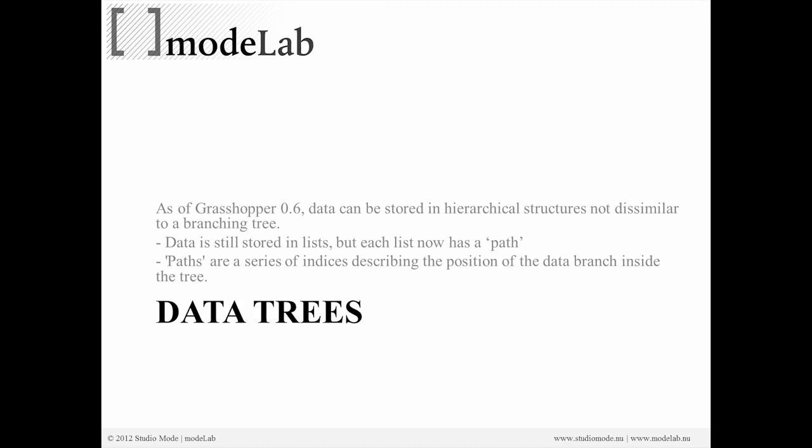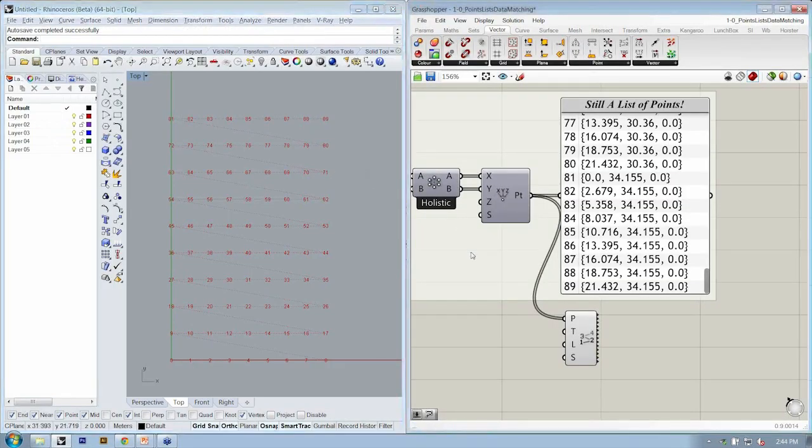So as of Grasshopper 0.6, which is now a couple years old, we're well past 0.6, before there weren't but now there are data trees. Data can be stored in hierarchical structures as opposed to just simple lists, not too dissimilar to the analogy of a branching tree. So data is still stored in lists, but now each list has an associated path. That path is our key, and the path is just a series of indices describing the position of that data inside the tree. So let's bounce back over to Grasshopper and figure out what all that means.